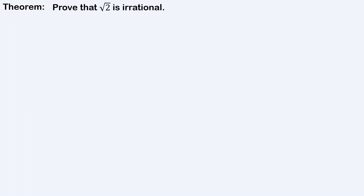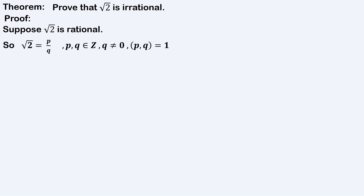We prove that the square root of 2 is irrational by contradiction. That is, we want to show that square root of 2 is irrational, but on the contrary we suppose that square root of 2 is rational. So if square root of 2 is rational, then it can be written in the form p over q, where p and q are integers, q cannot be 0, and the greatest common divisor of p and q is 1. Now squaring both sides: square root of 2 squared equals p over q squared, which means 2 equals p squared over q squared, so p squared equals 2q squared. Let's name this equation 1.